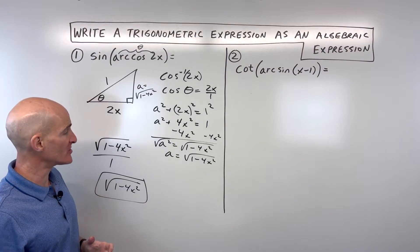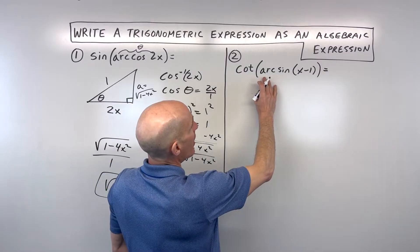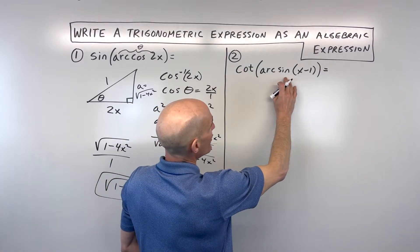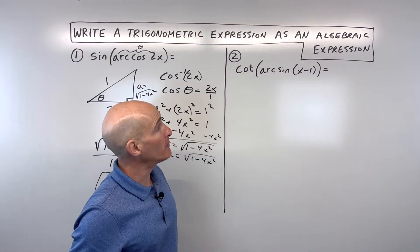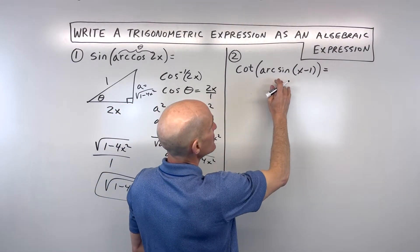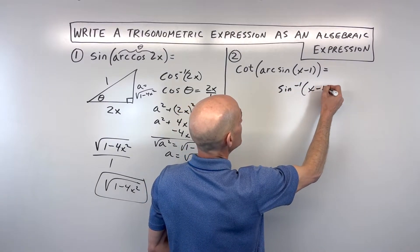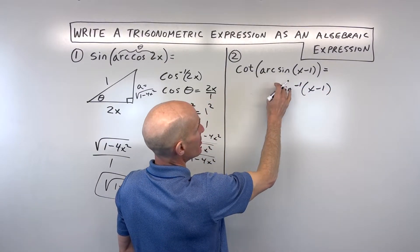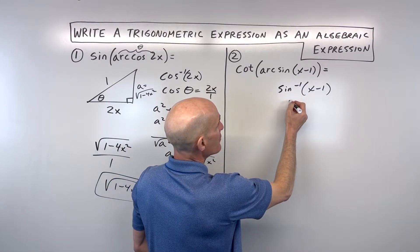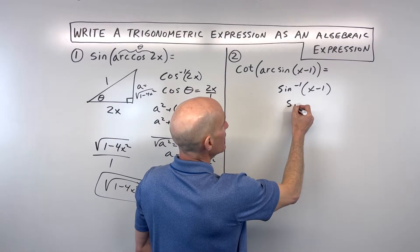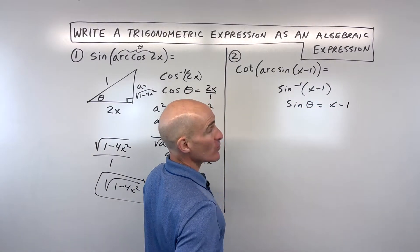Let's take a look at another example. For number 2, same idea — the cotangent of the arcsine of x minus 1. Start from the inside and work your way out. Arcsine is really like saying sine inverse of x minus 1; this is just a different notation. Arcsine or sine inverse, it's the same thing. But sine inverse means that we're solving for the angle, so this is saying: sine of what angle equals x minus 1.